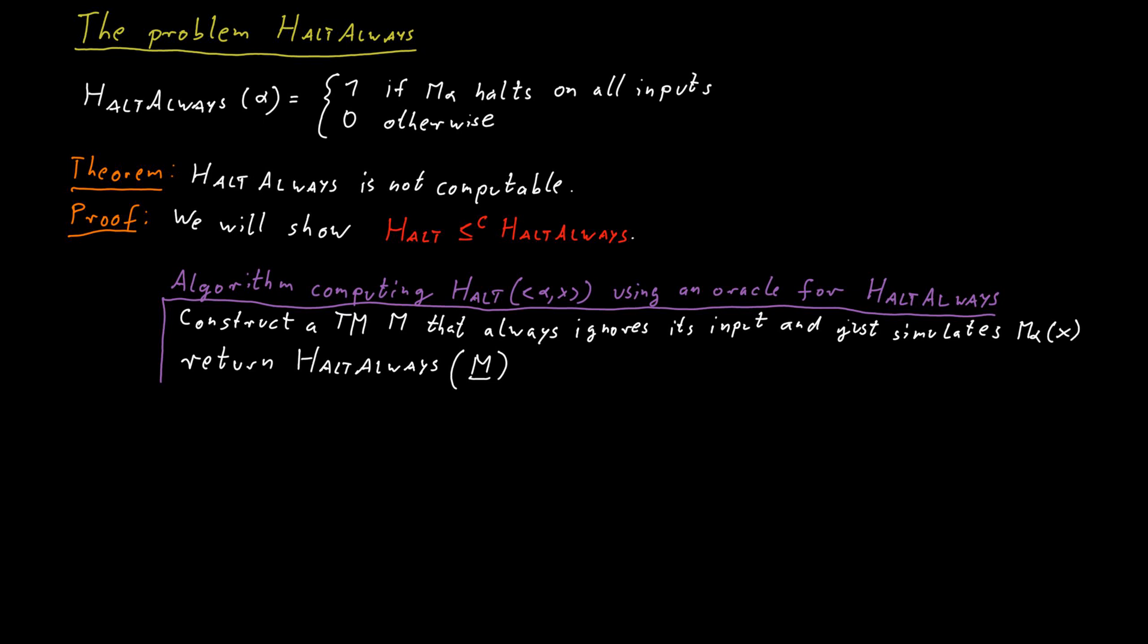We conclude that if we could solve HALT-ALWAYS, so we could implement this Oracle, then we could also solve the halting problem, the original halting problem. But we already know that the original halting problem is not decidable. And therefore we conclude that HALT-ALWAYS is also not decidable. And that's the entire proof.